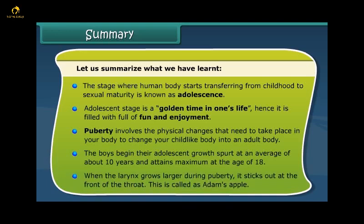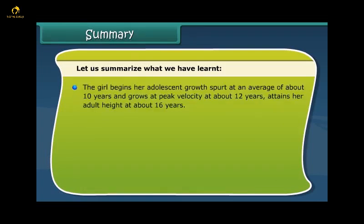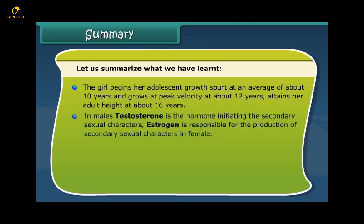When the larynx grows larger during puberty, it sticks out at the front of the throat — this is called Adam's apple. The girl begins her adolescent growth spurt at an average of about 10 years, grows at peak velocity at about 12 years, and attains her adult height at about 16 years. In males, testosterone is the hormone initiating the secondary sexual characters. Estrogen is responsible for the production of secondary sexual characters in females.